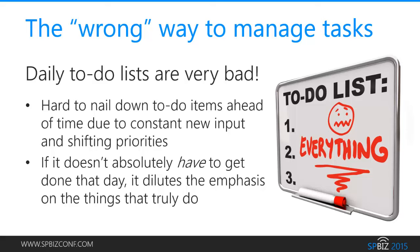I want to point out the wrong way to manage your tasks. Have you ever tried creating a daily to-do list on your calendar, forecasting out days or weeks with what you'd like to accomplish each day? I used to do this and it did not work. David Allen sums it up perfectly: first, it's hard to nail down your to-do items ahead of time because new things keep creeping in and priorities are constantly changing. Second, if something doesn't absolutely have to get done that day but it's on your list, it dilutes the emphasis on things that truly must get done. Treat your calendar as sacred.